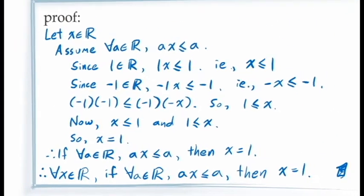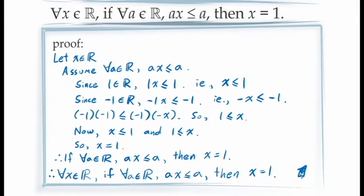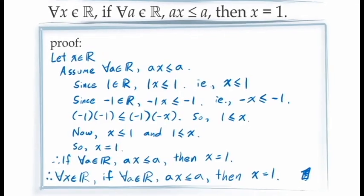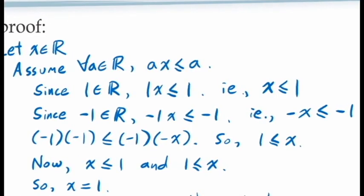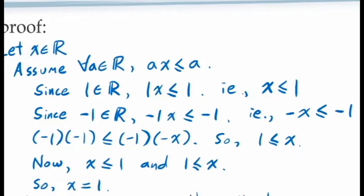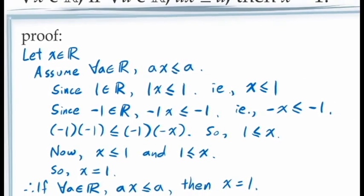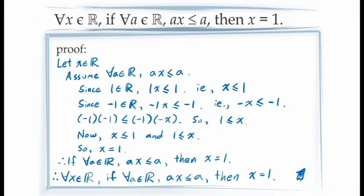Looking at this example, we see that the principle of universal instantiation allows us to choose any value of a we want to talk about, and we can even apply it to multiple values of a. However, what we need to be concerned about is choosing specific values of a that are going to give us relevant information needed to demonstrate whatever we're trying to prove.